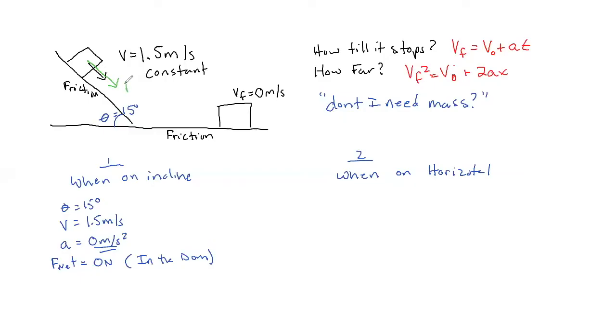I have this force right here, which is FG parallel. You can go back to my other incline plane videos if you're curious how I got that. And the other one is this force that opposes motion, the force of friction, and because F net is going to be equal to 0, I know that FG parallel must be equal to the force of friction.